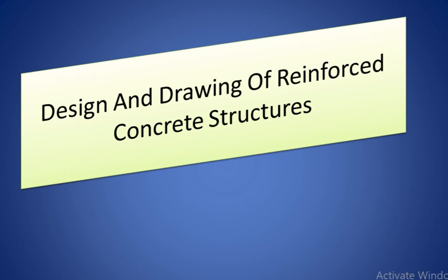If a structure does not have proper shape and size, it may fail at a certain point or within a certain period of time. Any structure, whether it may be a column, slab, or any civil engineering structure, must have a certain proper design. Design means giving the proper shape and size to the structure.